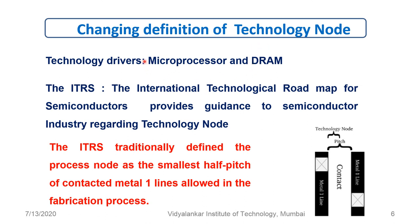After 2006, microprocessors started dominating technology scaling. Therefore, ITRS — the International Technological Roadmap for Semiconductors — which provides guidance to the semiconductor industry regarding technology nodes, traditionally defined the process node as the smallest half pitch of contacted metal 1 lines allowed in the fabrication process. That means these are two metal lines, and the distance between them is called the pitch; half of that distance is called the technology node.